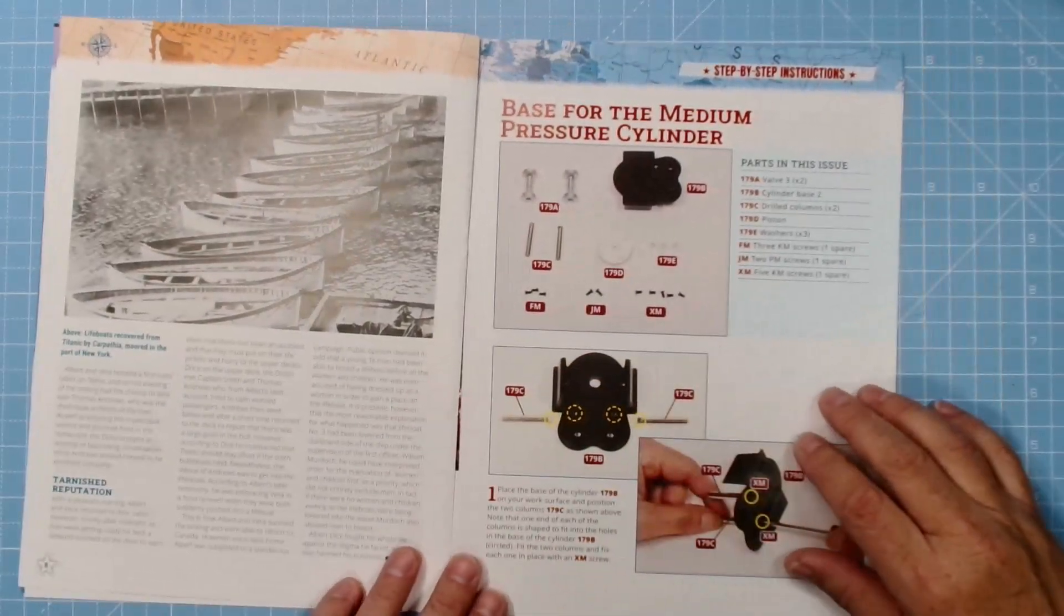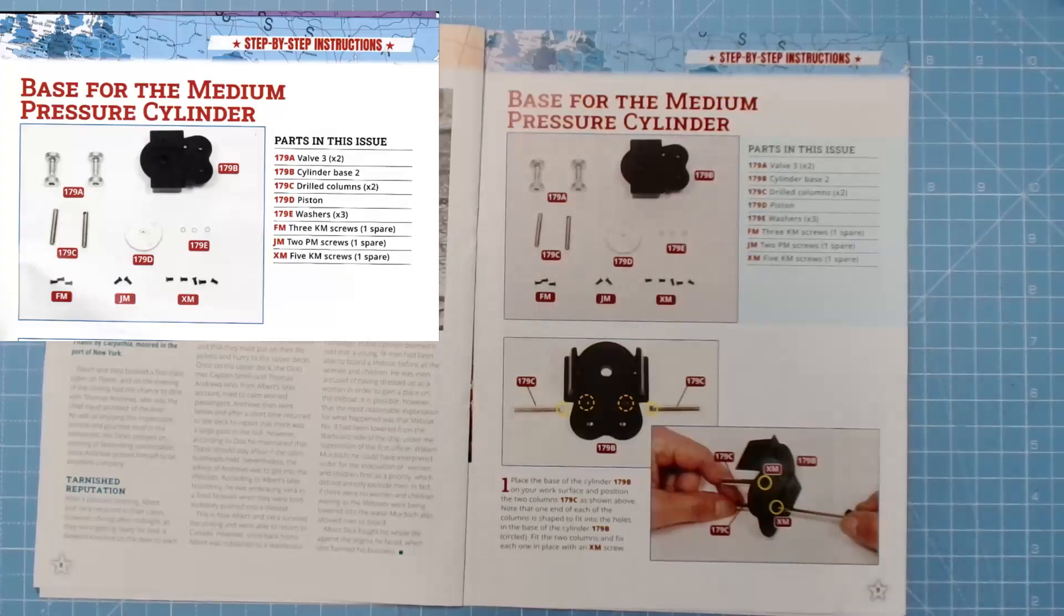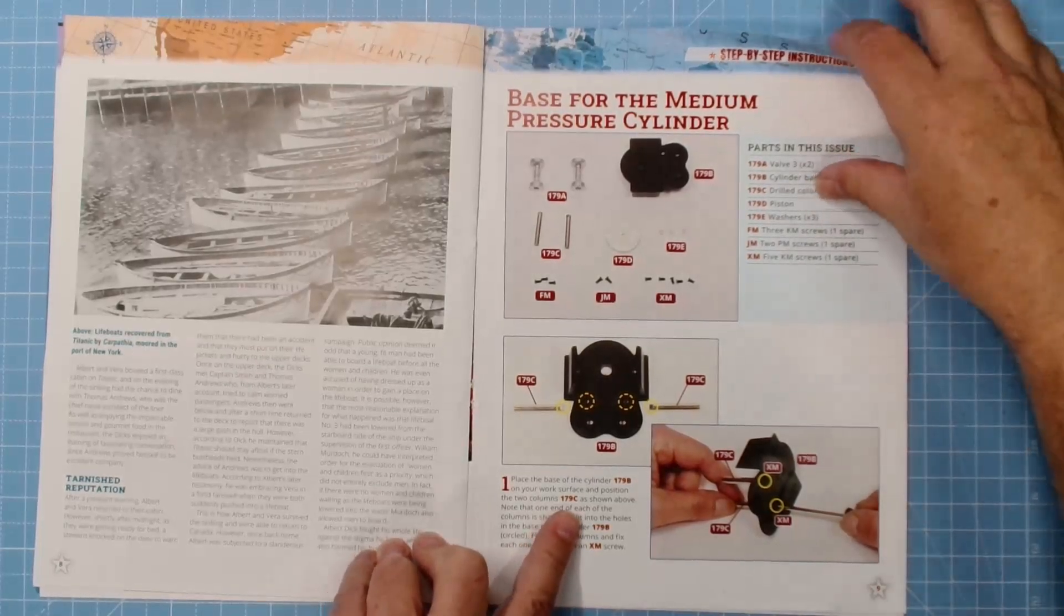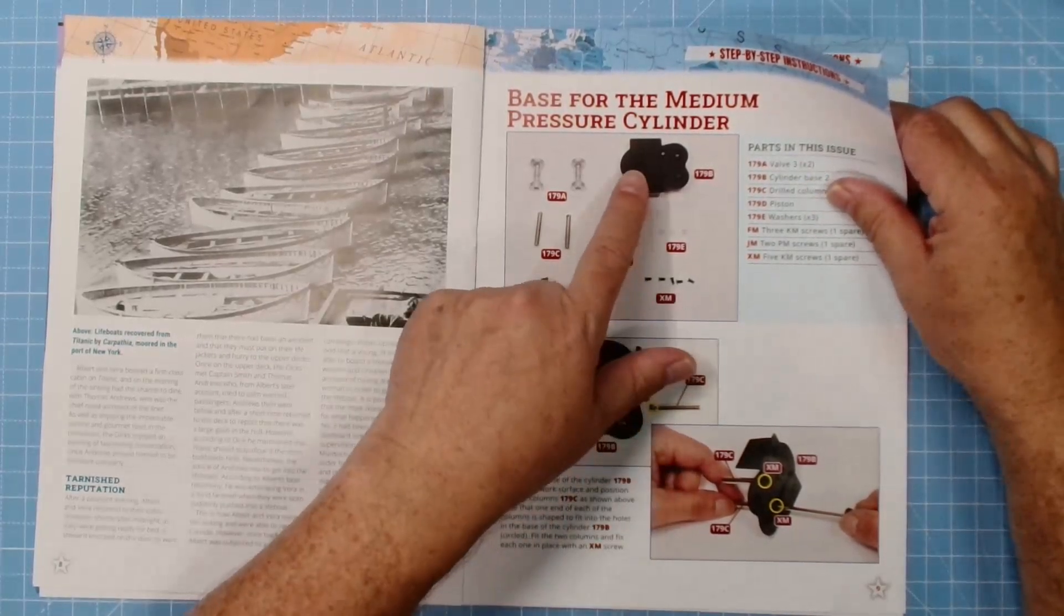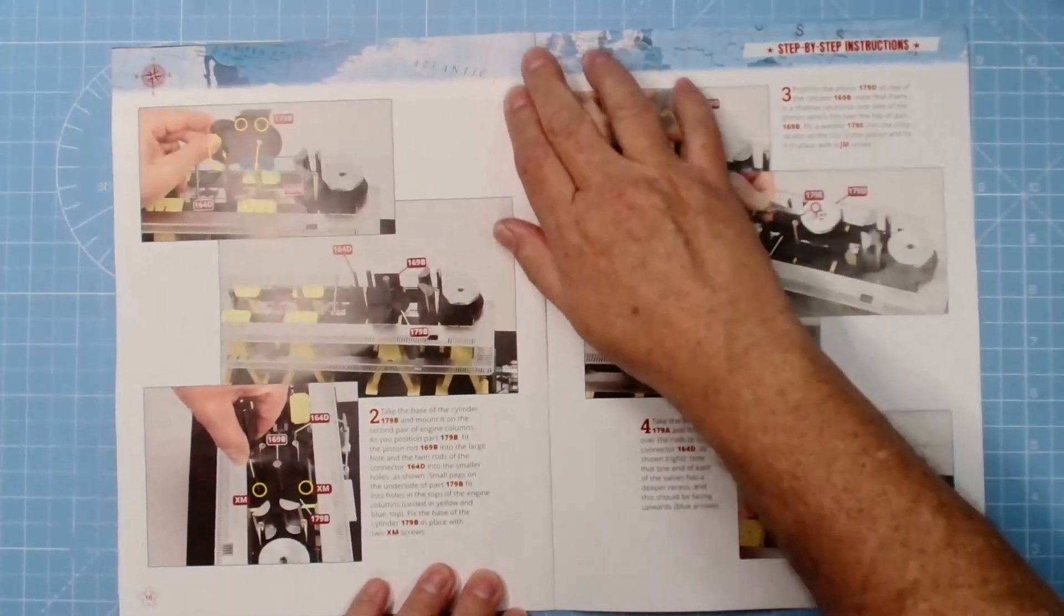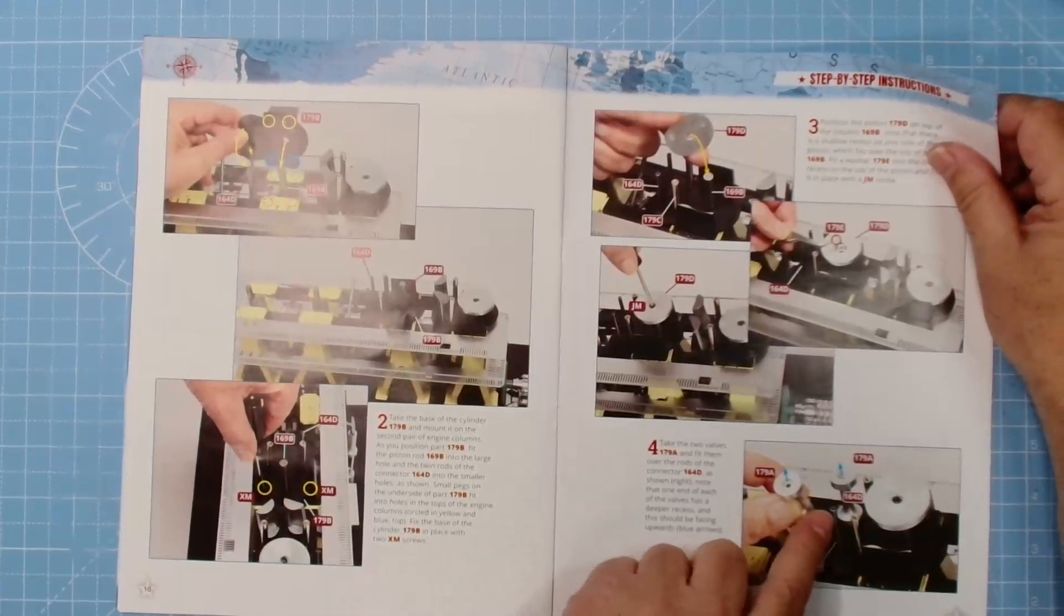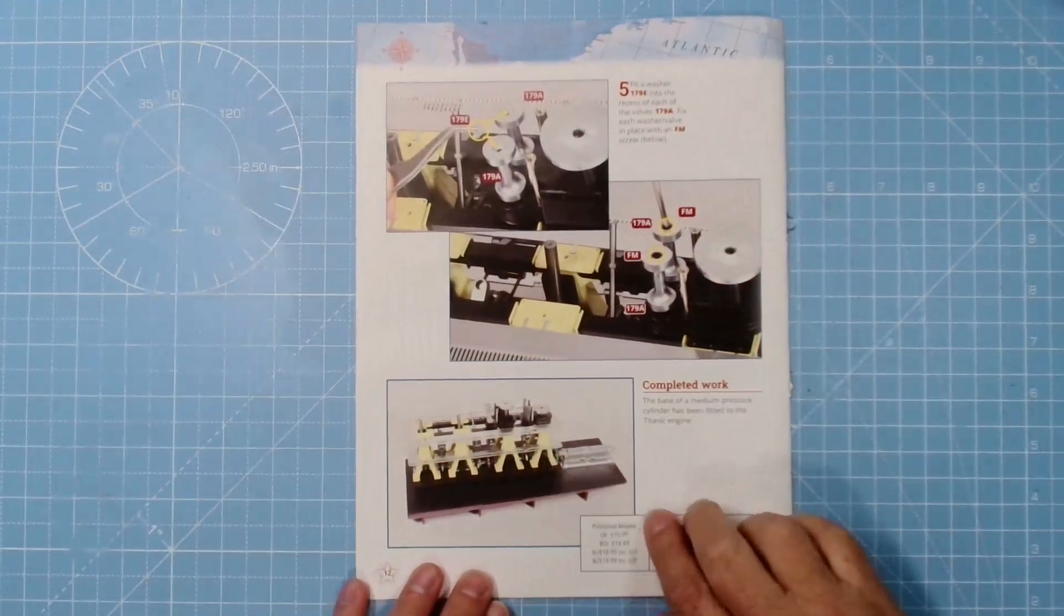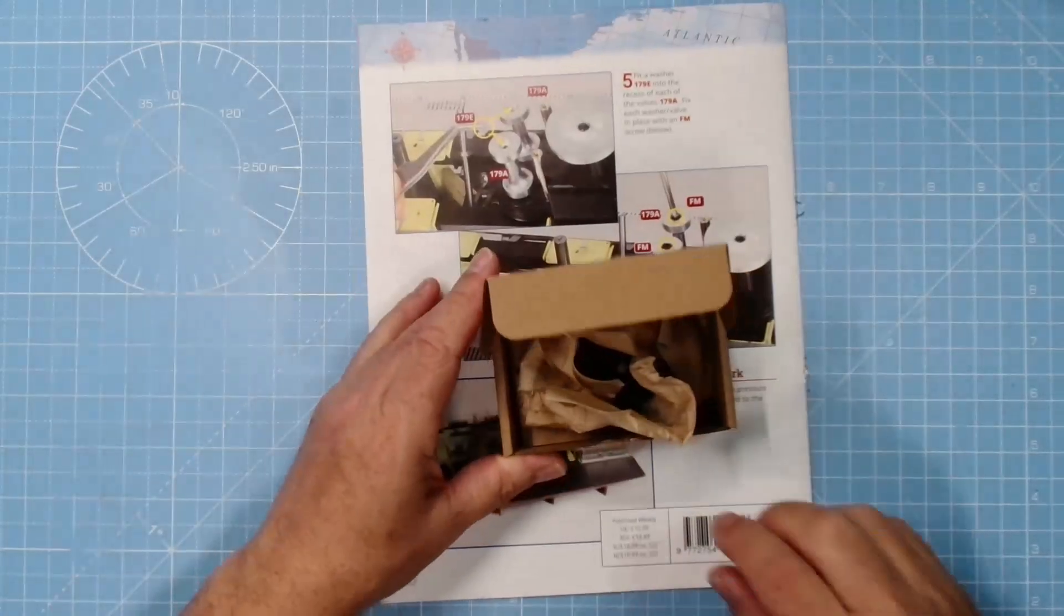In the parts we have the base for the medium pressure cylinder: 179A valve times two, cylinder base, two drill columns times two, piston washers times three, FM, JM, XM screws. Similar to what we did before, but we have got a replacement part for 179B. I'll show you that. These are different. This is the replacement part.